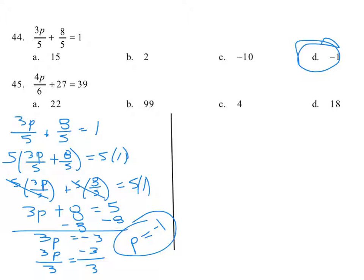Okay, next problem, 45. Everything isn't divided by 6, so the first thing we're not going to do is multiply by 6 to clear it. We're going to say 4p over 6 plus 27 equals 39.